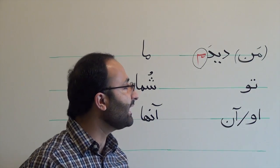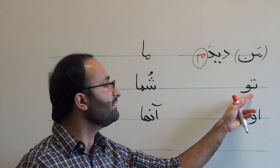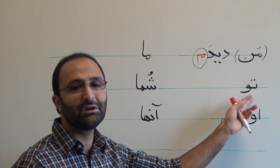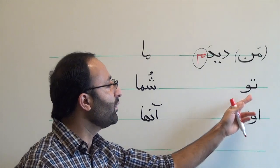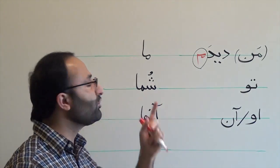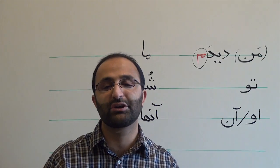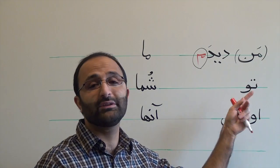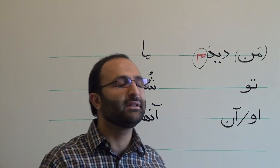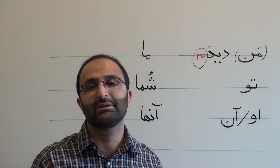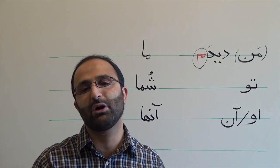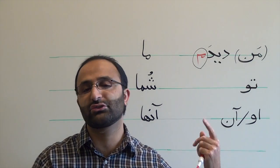Another point is that, unlike English, in Farsi we have a 'you' singular and a 'you' plural. So 'to' is you singular, and 'shoma' is you plural. But we use 'shoma' a lot to refer to just one person, and it is the sign of respect. So it's very common to address someone with 'shoma' even when he or she is just one person.